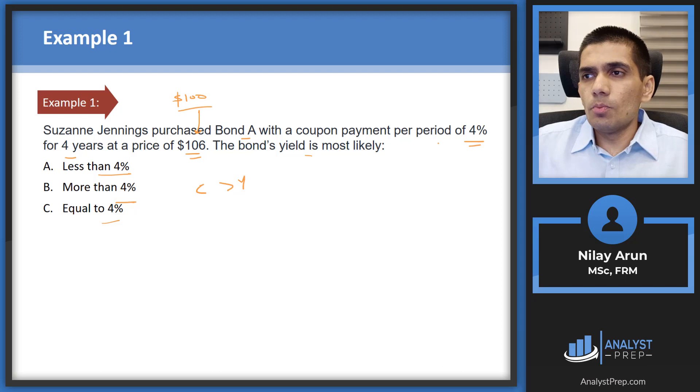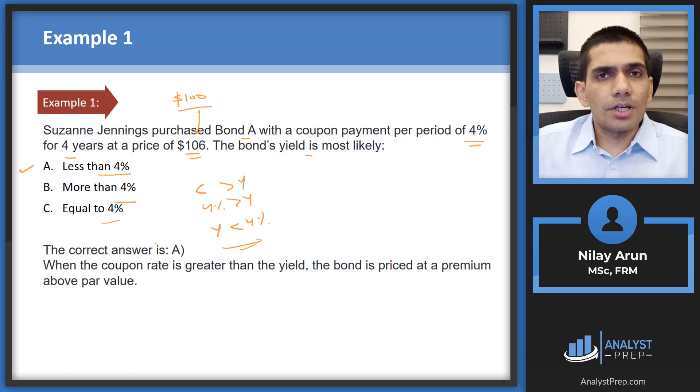Now how much is the coupon? That's 4% which means this will be greater than Y. Or just stated the other way, the yield should be less than 4%. So the correct answer in this case is A. The yield will most likely be less than 4% and that's the reason why the bond is trading at a premium. So that's your correct answer.